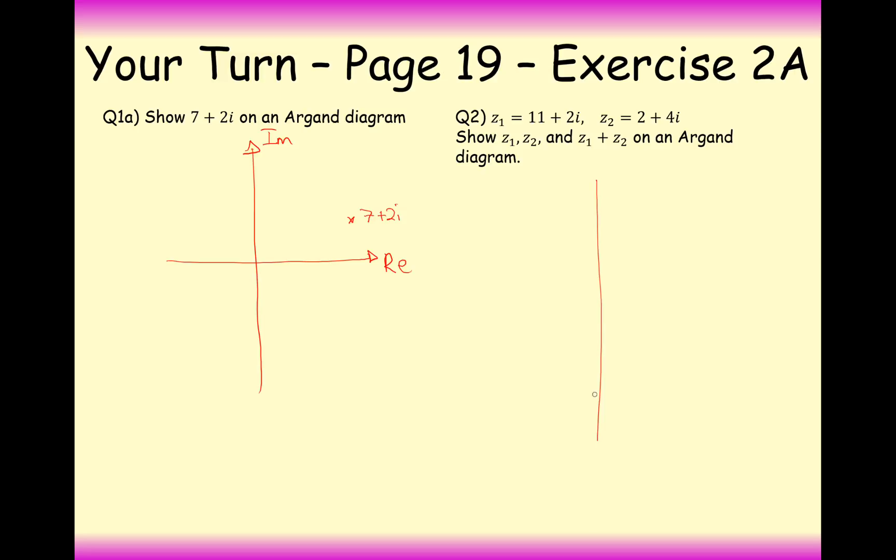The second one, roughly the same. Hopefully this is fairly straightforward by now. Z1 is 11 plus 2i, so 11 along, 2i up. Always trying to get these things to scale, even if you haven't plotted the axes.